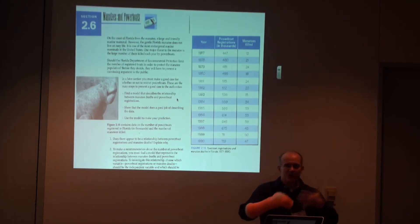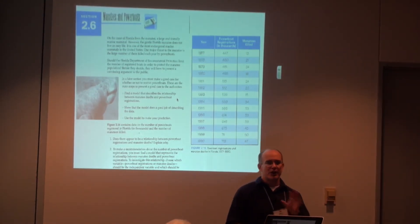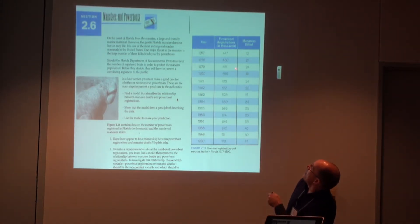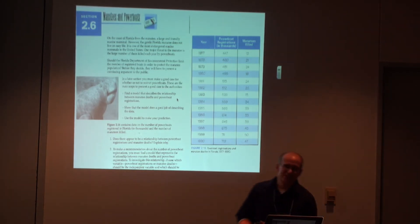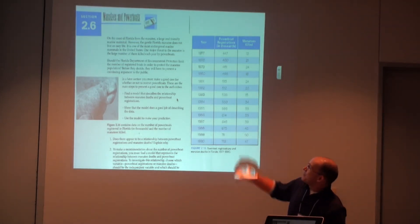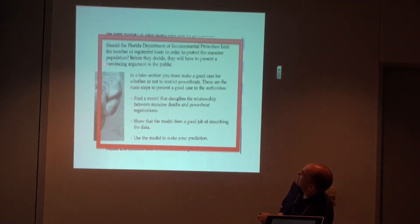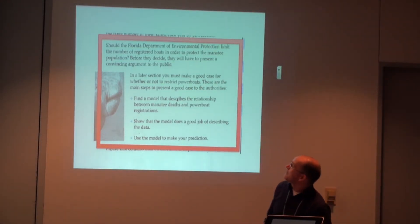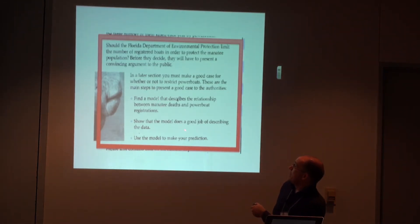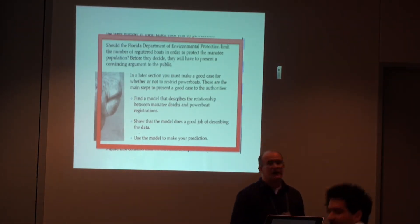COMAP does a really good job of providing very good data sets to begin modeling with, often housed in pretty authentic situations. For example, there's one about manatees — licensed power boats in a lake region and the number of manatees killed in a yearly cycle based on the number of power boats. Students must present a convincing argument to the public. They have to find a model that describes the relationship — it doesn't tell them what model. They have to show or prove their model does a good job describing the situation, and make a prediction based on it.